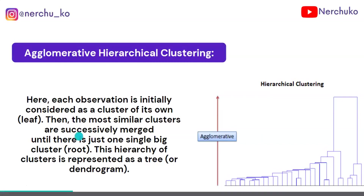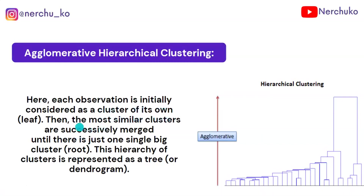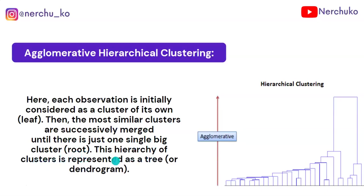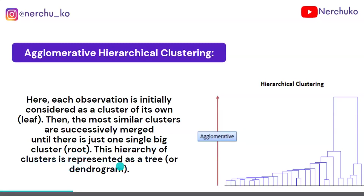Each observation is initially considered as a cluster of its own. Then the most similar clusters are successively merged until there is just one single big cluster. This hierarchy of clusters is represented as a tree, or a dendrogram.